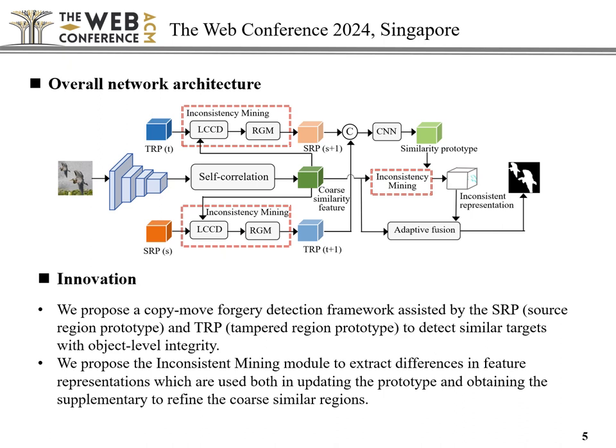The SRP and TRP are leveraged for inconsistency mining, using the co-similarity features to obtain an updated TRP and updated SRP. The two are then fused to generate a pair of similar prototypes.